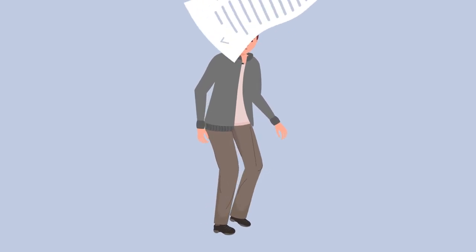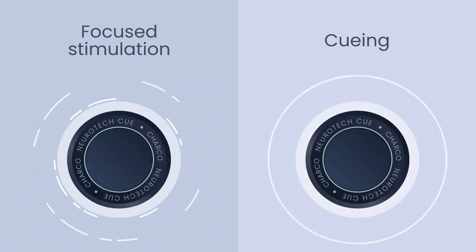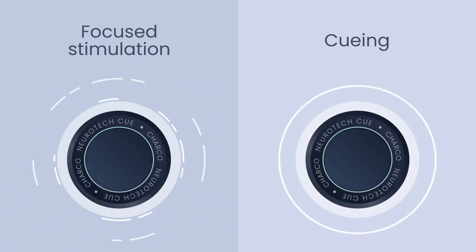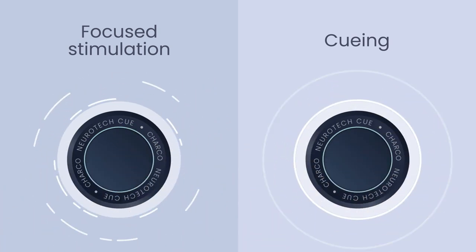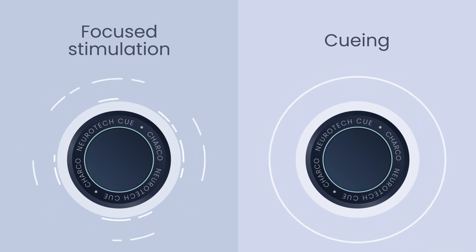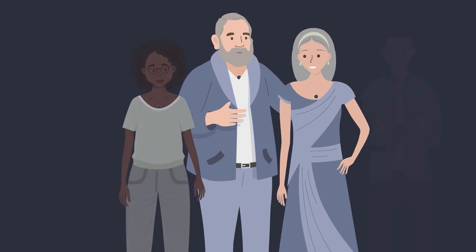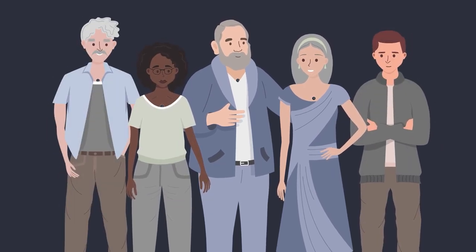While both focused stimulation and cueing have been studied extensively in literature, the Q1 is the first widely available device to combine and deliver them in a practical and patient-centered manner. With this combination, the Q1 may help to relieve the key movement symptoms experienced by people with Parkinson's.